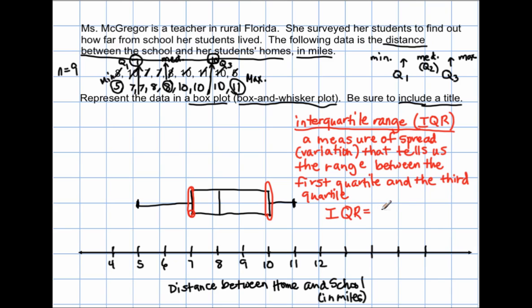So the interquartile range is found by taking quartile three and subtracting quartile one from that. So in this case, the interquartile range would be quartile three is 10, these are in miles, minus 7, which is the first quartile, and 10 minus 7 is 3. So the IQR would be 3. The interquartile range of this data set would be 3.